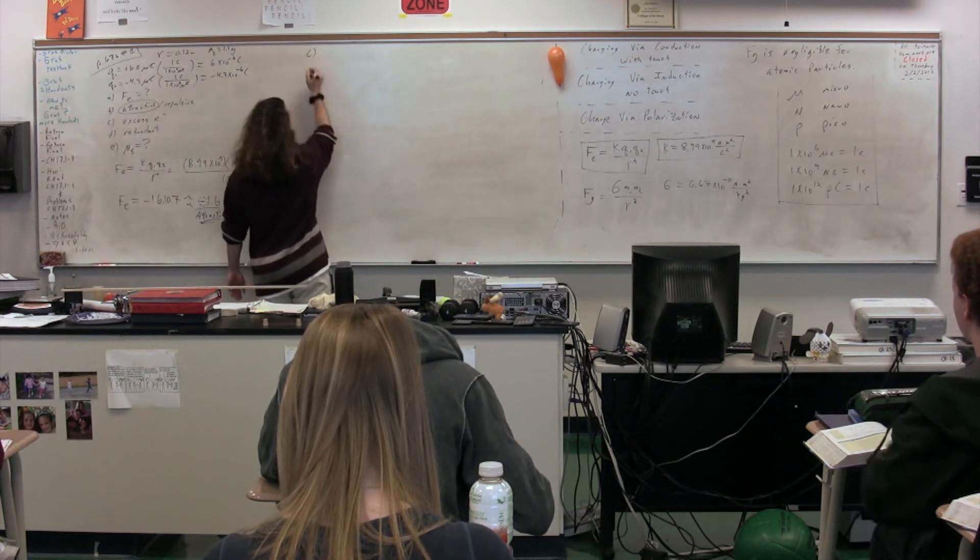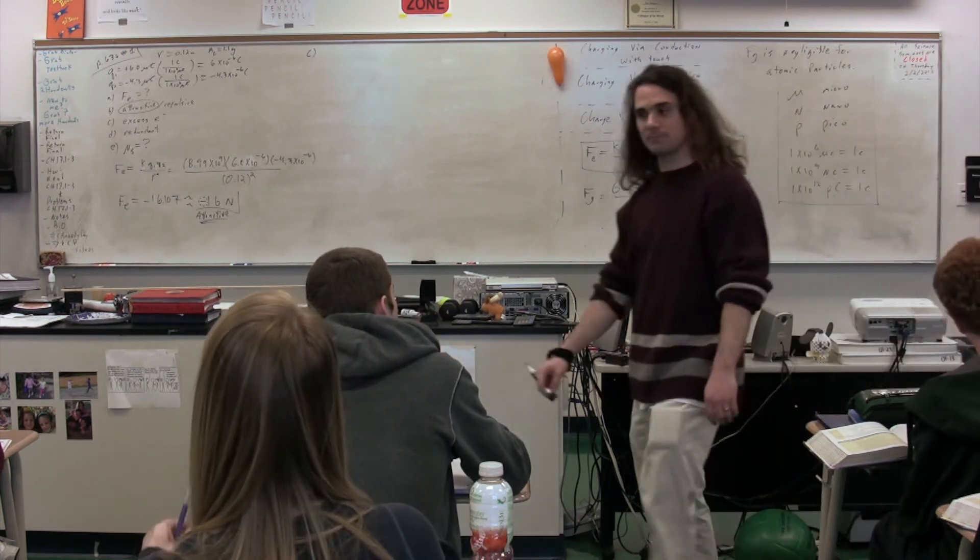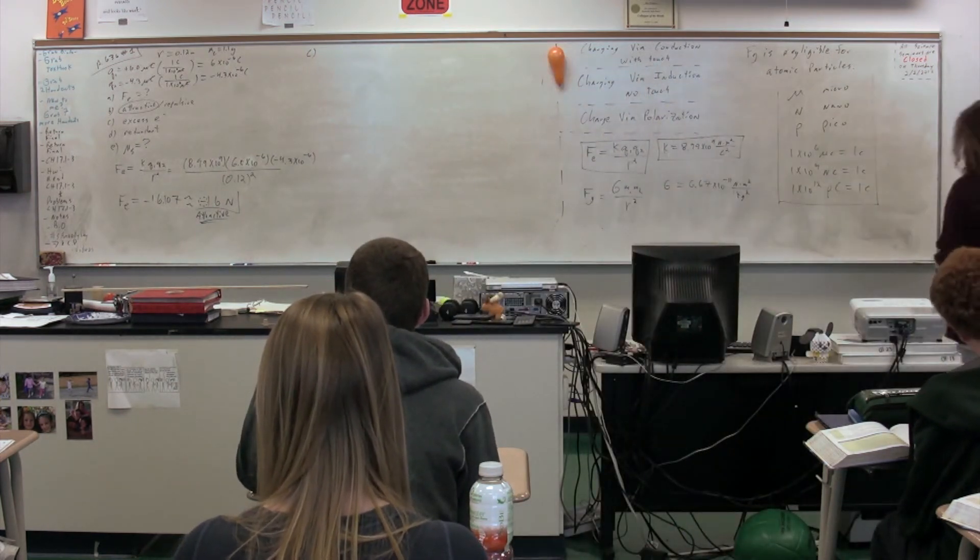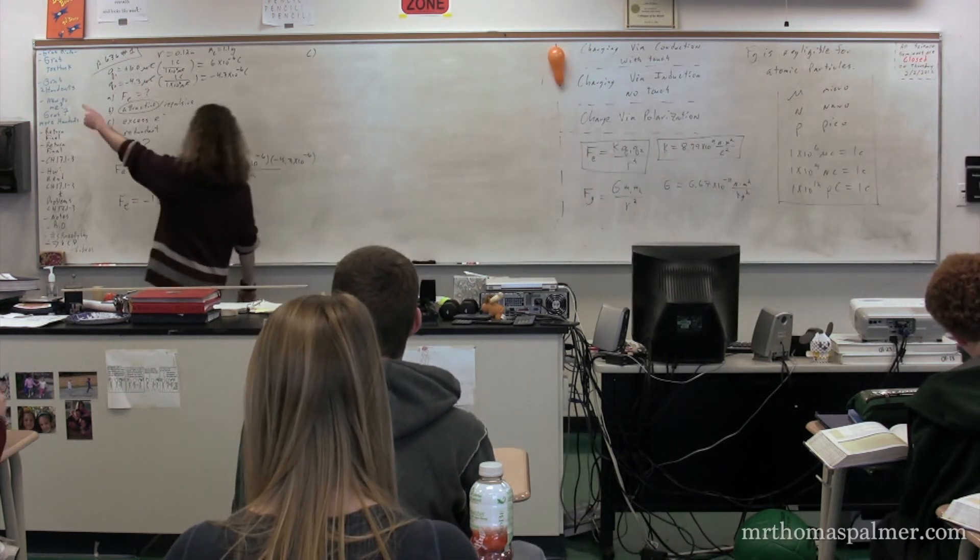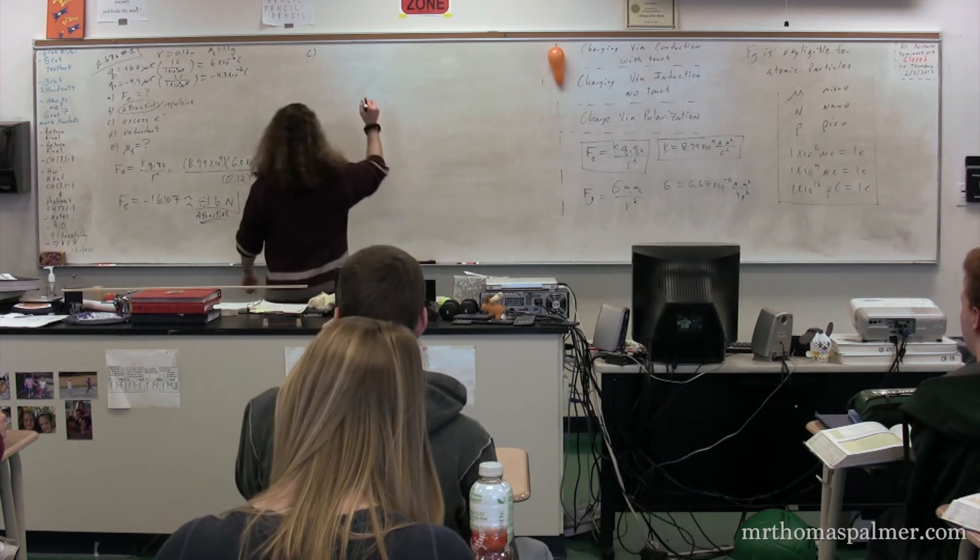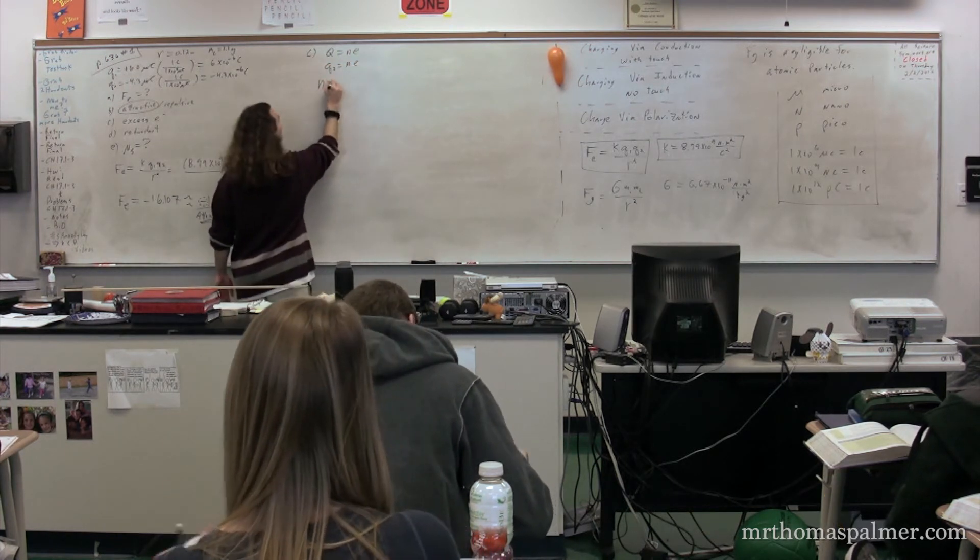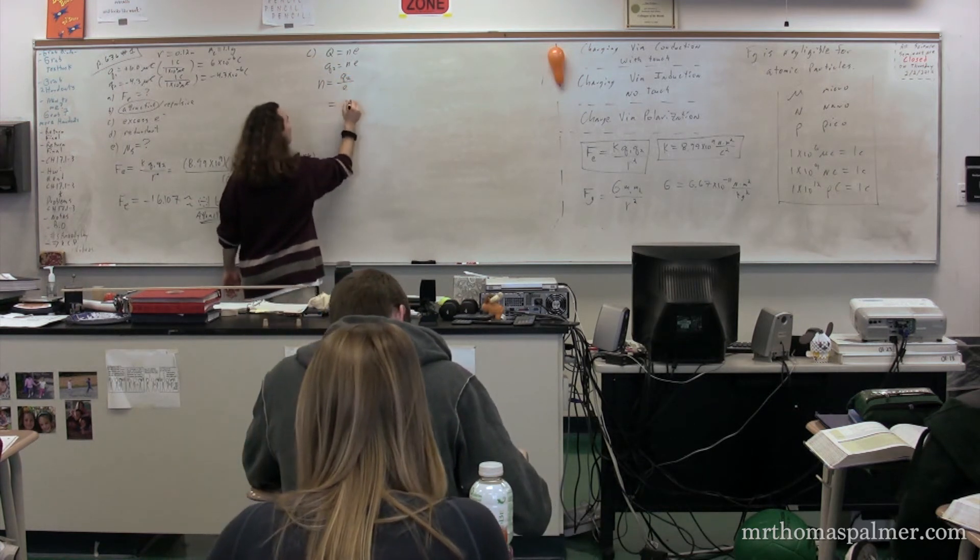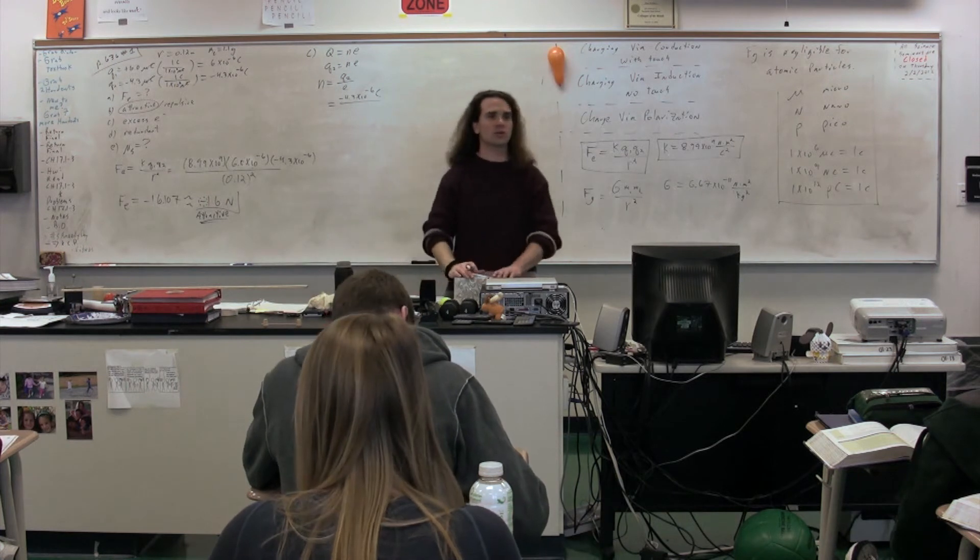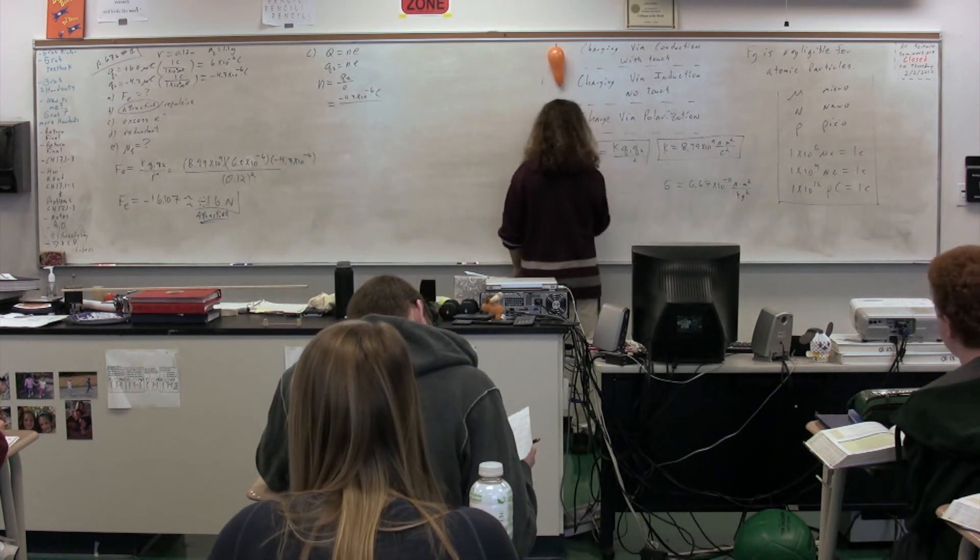Part B we have answered. Part C is to figure out the excess number of electrons on this cork. Who can tell me how to figure out the excess number of electrons? The goal is to figure out the excess number of electrons on Q2. You take 4.3, which is q equals n times e. Remember, we go all the way back to the fact the charge is quantized: q is equal to n times e. In this particular case, Q2 is equal to n times e. We're solving for n. It's equal to Q2 divided by e, or negative 4.3 times 10 to the negative 6 Coulombs divided by e. What is the charge we're going to use here?